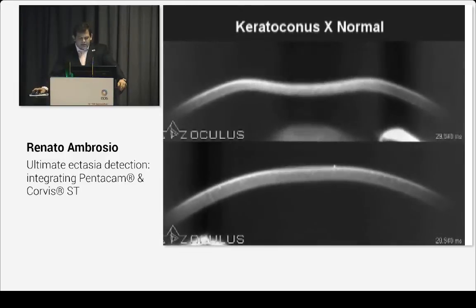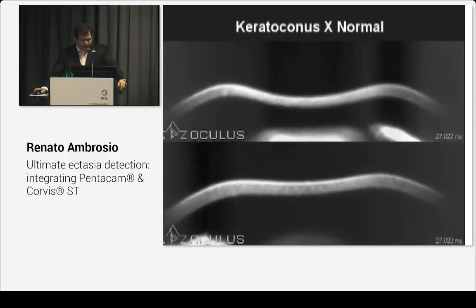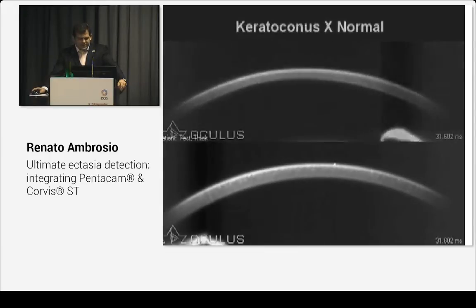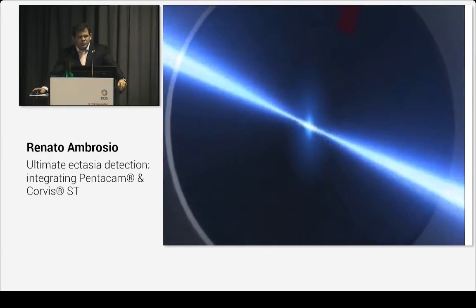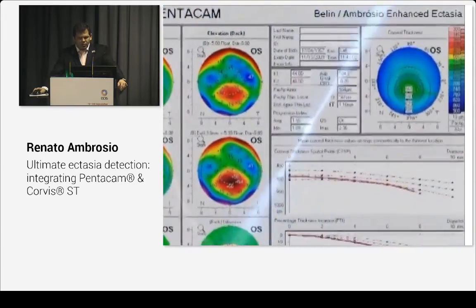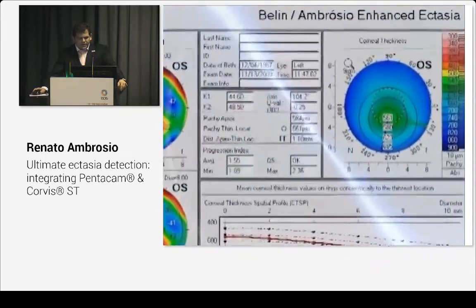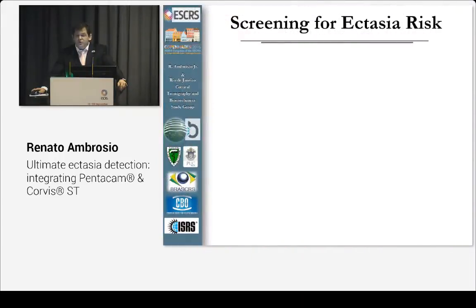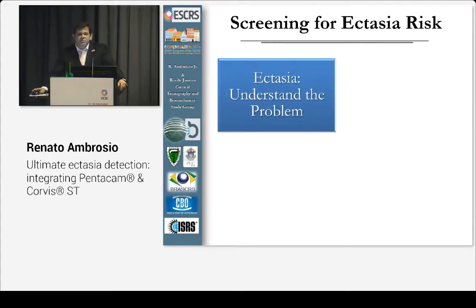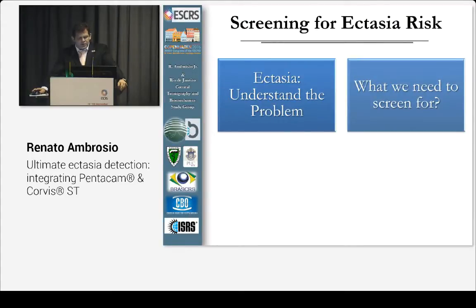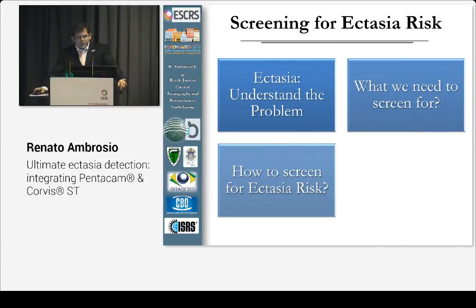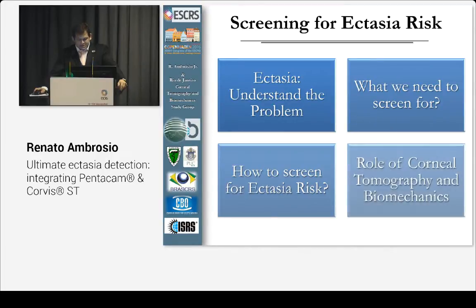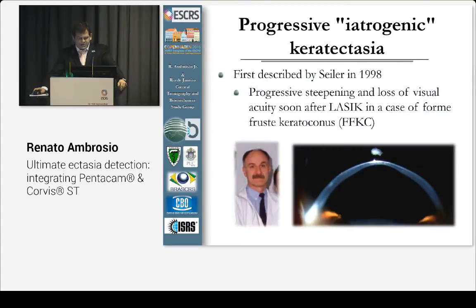What we're trying to do for a long time is combine tomography and biomechanics. If you see these two corneas, this is a very thick normal cornea and that was a keratoconic cornea. But when we combine tomography and biomechanics, we really go beyond what we have to do for screening. However, we have to understand what the problem is and what we're trying to screen for. Developing algorithms to detect ectasia risk is different from detecting ectasia as a disease, and the combination of topography, tomography, and biomechanics is critical.